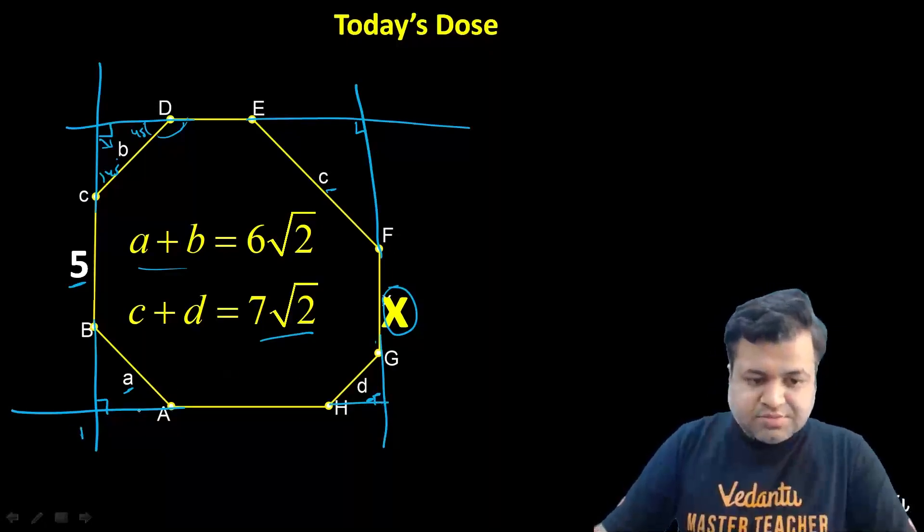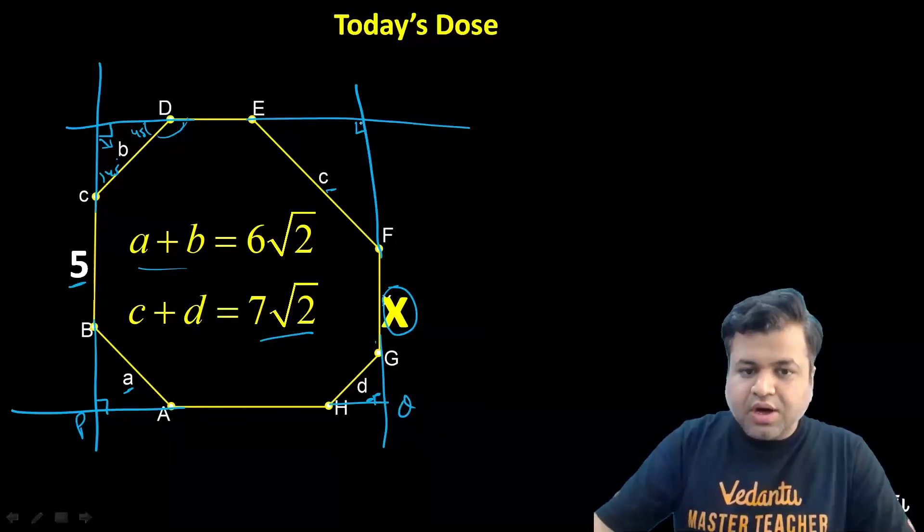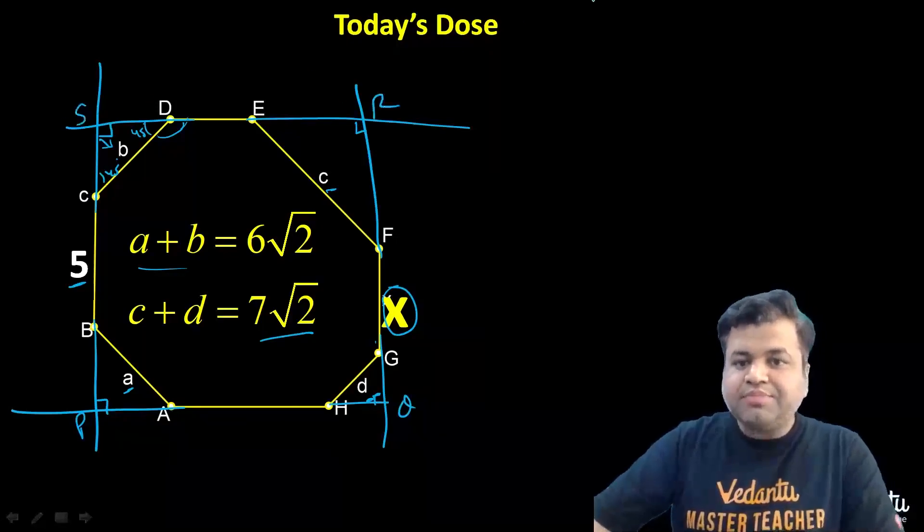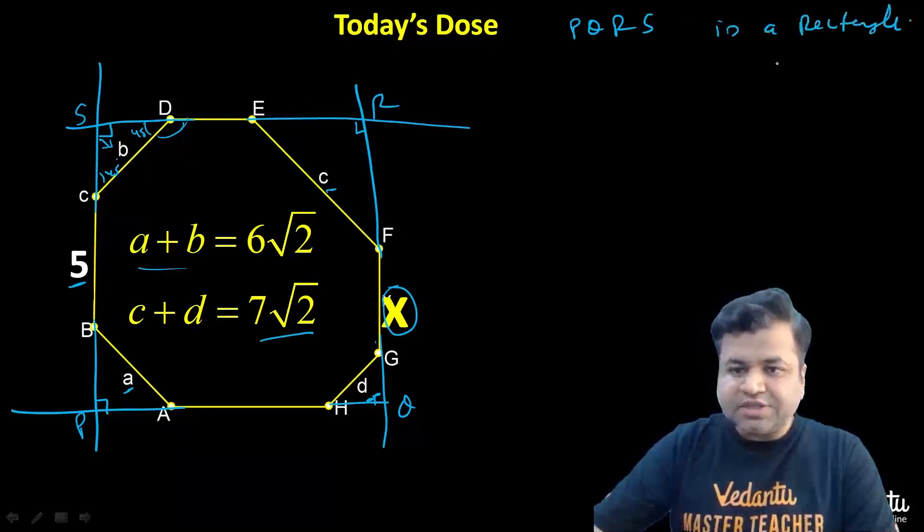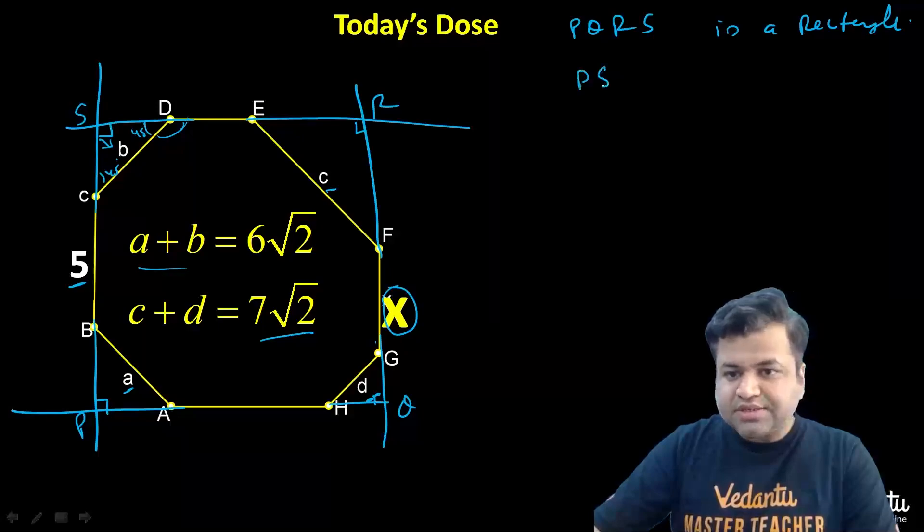Let's name this as PQRS. Clearly PQRS will be a rectangle and its opposite sides should be equal. That means PS should be equal to QR.